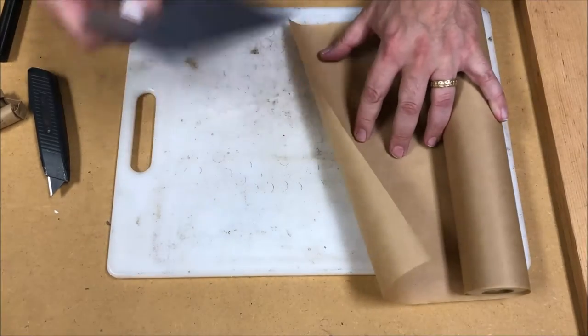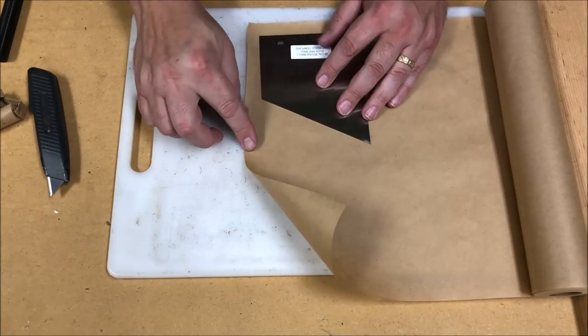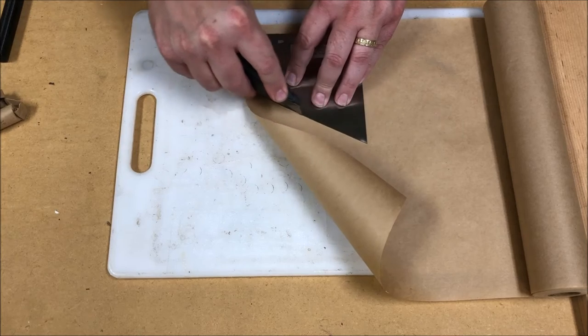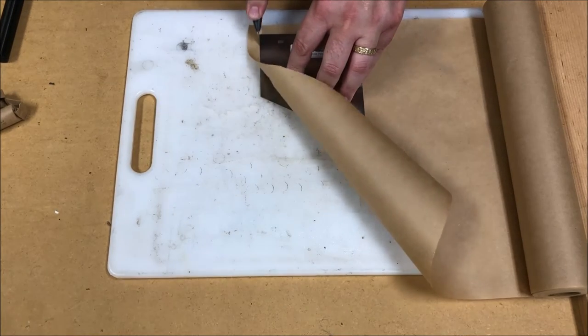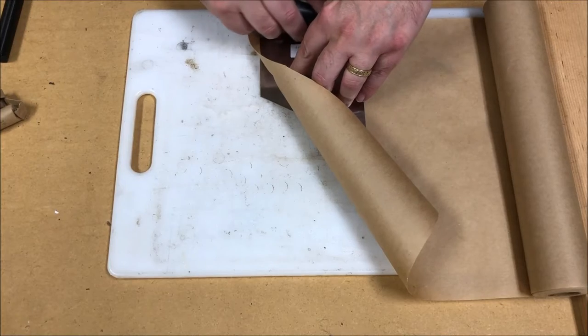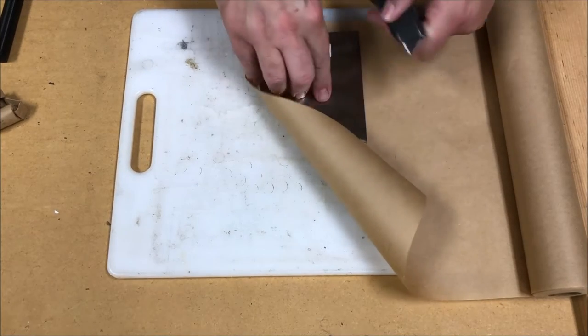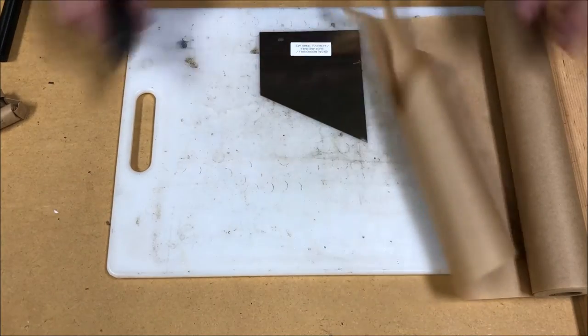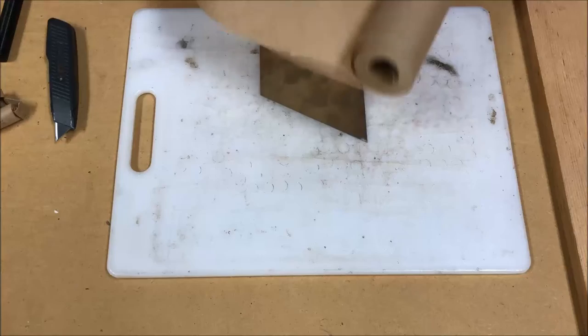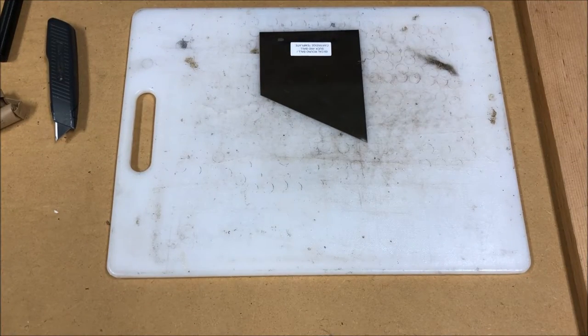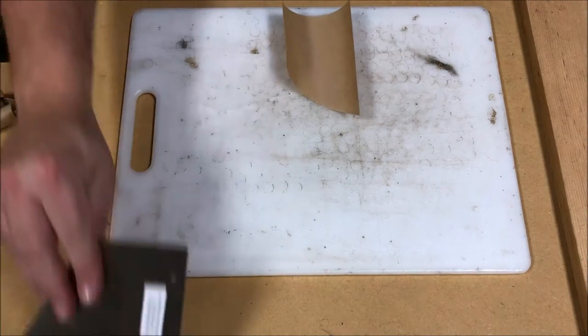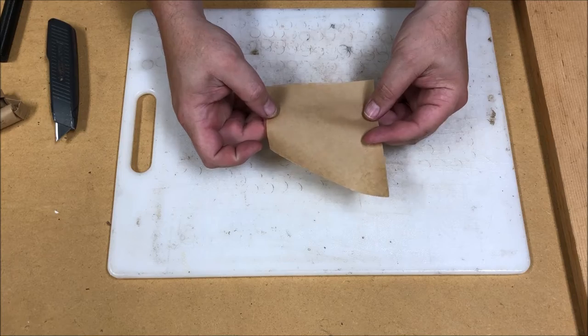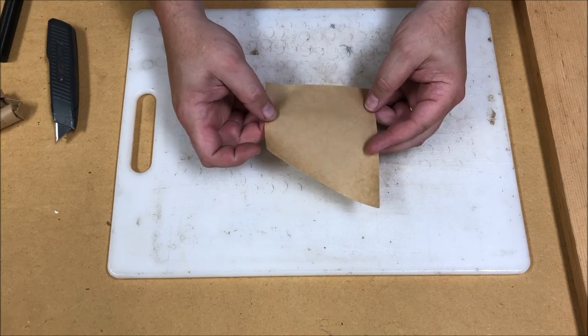So to get started, you're going to take the template and your paper and a sharp razor knife, and keeping your fingers out of the way, you're just going to cut out the paper. You can cut out multiples at one time just by folding the paper over multiple times, but for our purposes here, we're just going to cut out one. That's the paper for making a 69 caliber US cartridge for round ball or buck and ball.